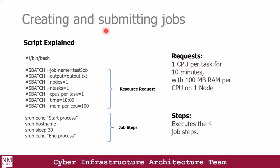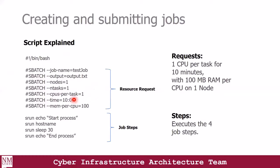Let's explain the script from the previous slide. At the very first line, you want to specify the shebang command, which tells the Linux system that this file should be treated as a batch script. Next, we have the resource request section containing the SLURM directives. This section includes the request of resources like the number of nodes, number of tasks, number of CPUs, the time, and the amount of memory required for your job.